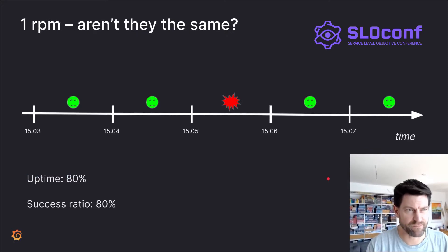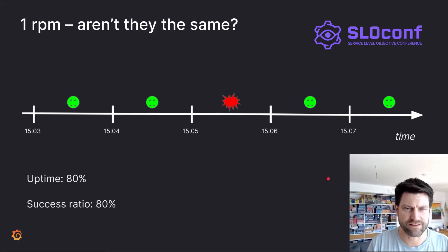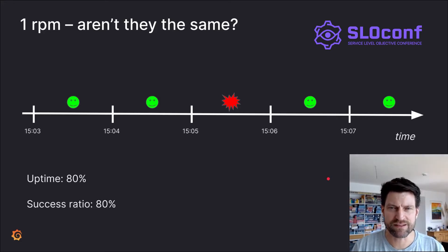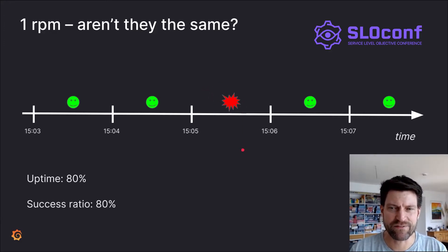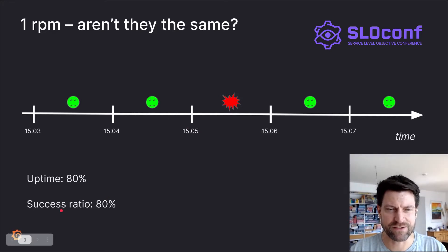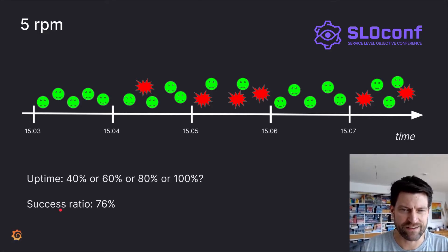But before I do that, let's step back and think about whether they are actually that different. Artificial traffic that sends precisely one request per minute — that's called probing. This talk is not about probing; it has a lot of caveats. But some people use probing to check if they are fulfilling their SLO. If you send yourself one request per minute and it fails, that's a down minute; if it succeeds, it's an up minute. Taking the success ratio gives you precisely the same result. In real life, though, traffic is never just one request per minute, and requests are different from what your probe is doing.